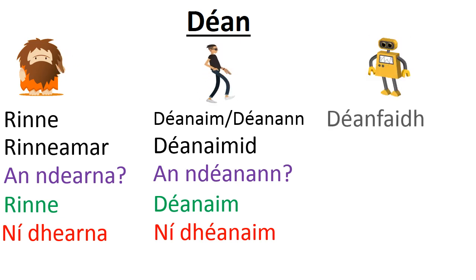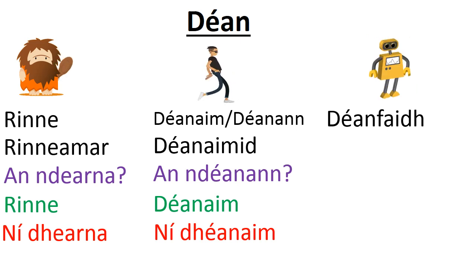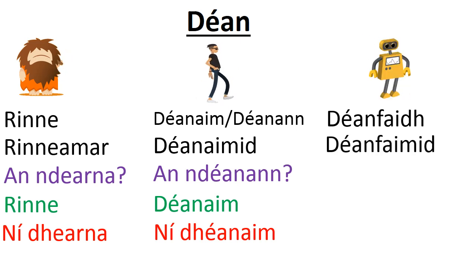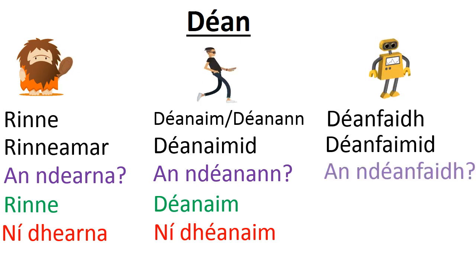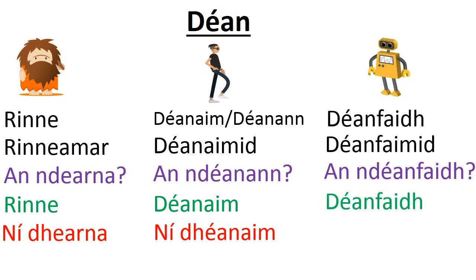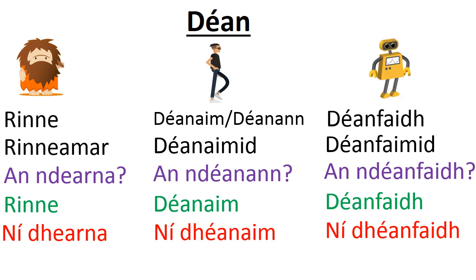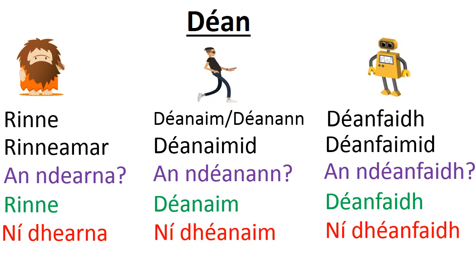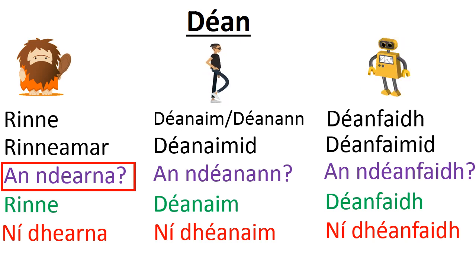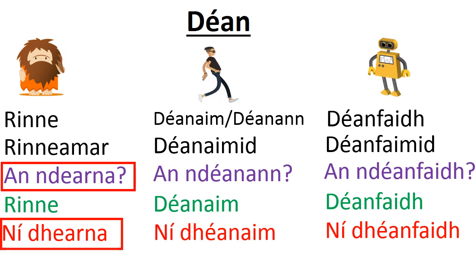Then onto the aimsir fháistineach: 'déanfaidh' — just as we'd expect. 'Déanfaidh mé', 'déanfaidh tú', etc. 'Déanfaimid' — we will make. The question is 'an ndéanfaidh' using 'an'. 'Déanfaidh mé' — yes, I will make it. 'Ní dhéanfaidh mé' — no, I won't do that. So with 'déan', for the large part it obeys all the rules of regular verbs. The only weird place is the aimsir chaite, particularly the question and answer.